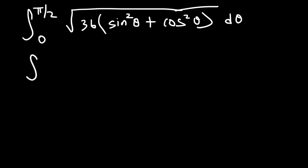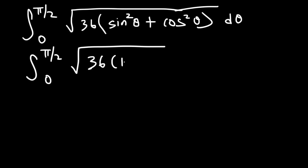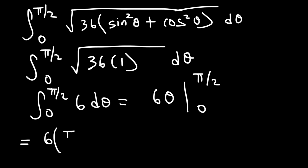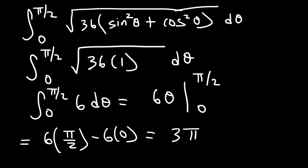There's a Pythagorean identity we need: sine squared plus cosine squared equals 1. So we have the square root of 36, which is 6. The antiderivative of 6 dθ is 6θ, evaluated from 0 to pi over 2. That gives 6 times pi over 2 minus 6 times 0. Since 6 divided by 2 is 3, the final answer is 3π.